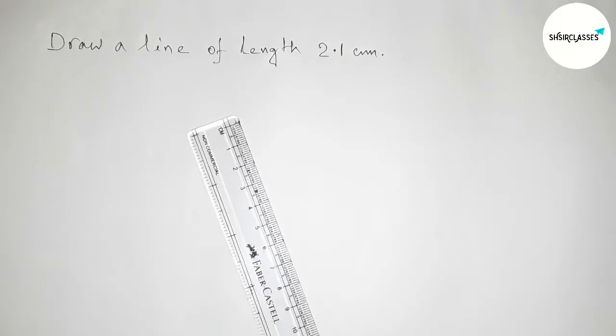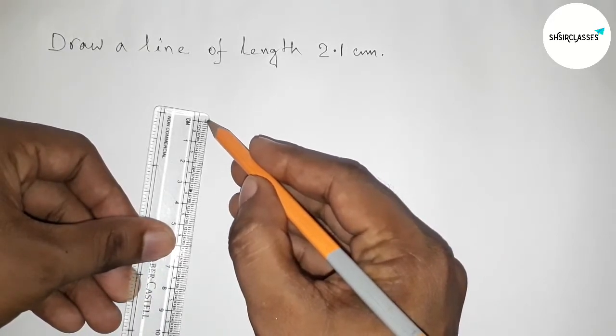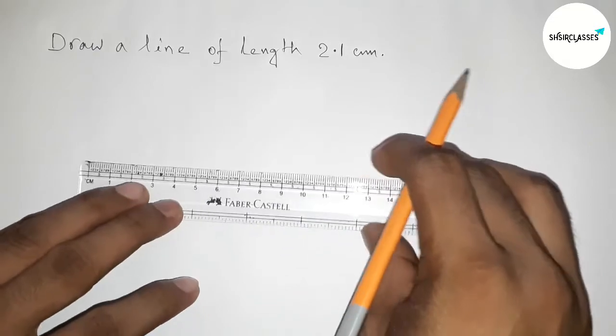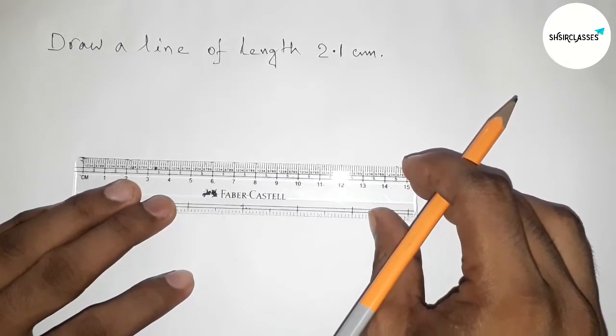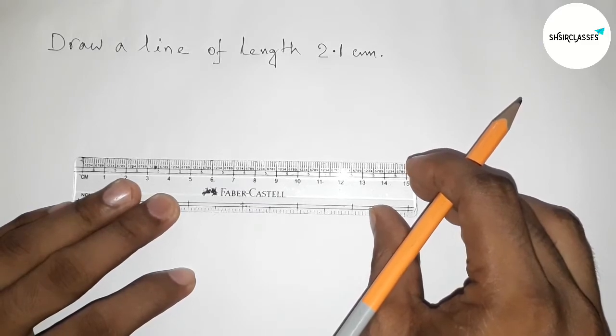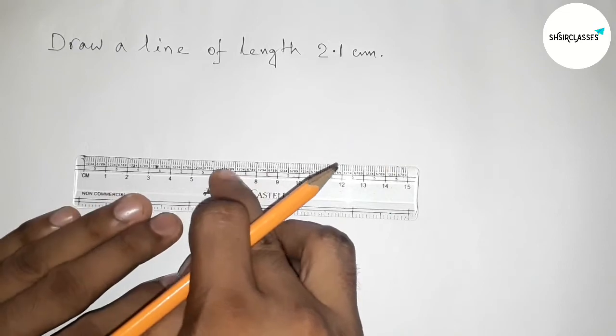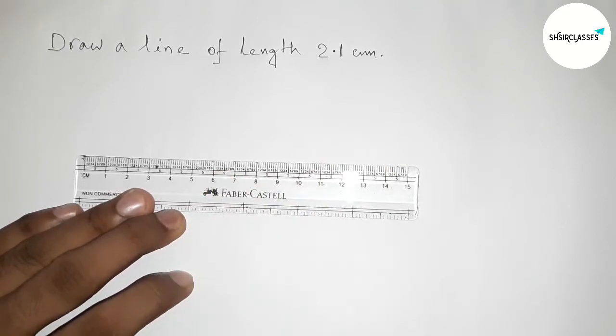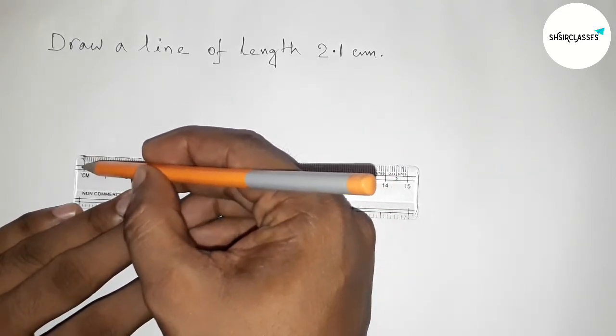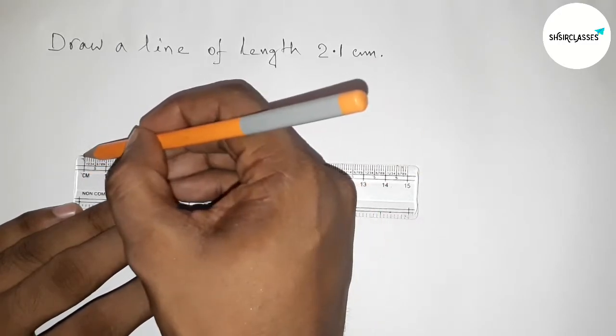First of all, I'm going to use a scale to measure the length. This is starting zero. Now by using the scale, I'm first measuring the length 2.1 centimeter. This is starting zero, so marking here.